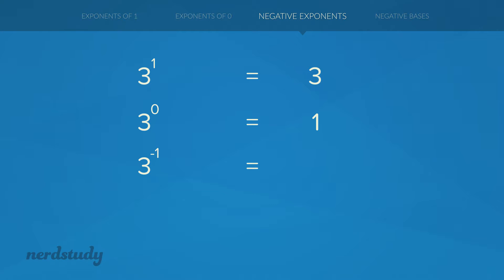So let's find out what that negative exponent equals. On the right side we had 1, so what happens when we divide 1 by 3? We can write this in fraction form: 1 divided by 3 is just 1 over 3. Now, that 3 in the denominator — we learned today that you can write it as 3 to the exponent 1, which is the same as writing 3. So let's write it as 1 over 3 to the exponent 1 for now, and we'll get to the reason why shortly.